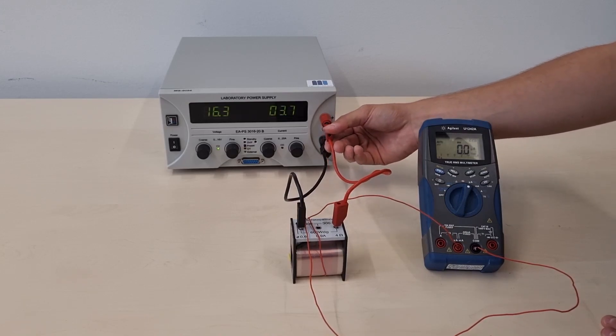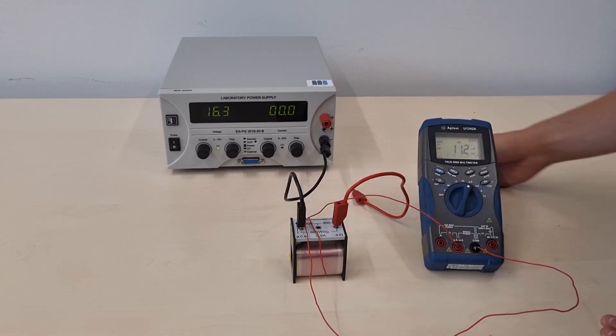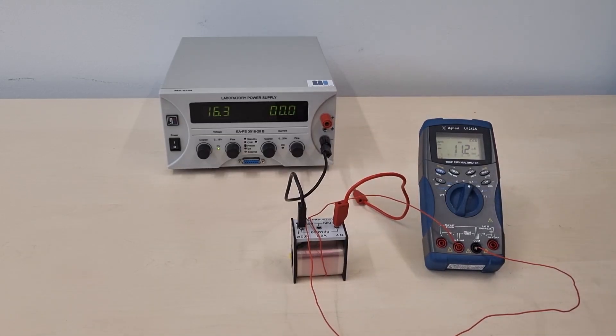Now we can see a measured current of minus 11.2 microamps. The minus sign indicates the direction of the current flow.